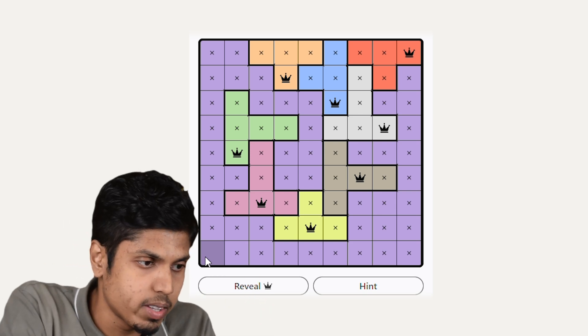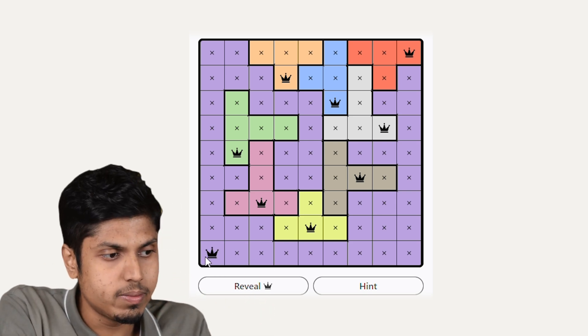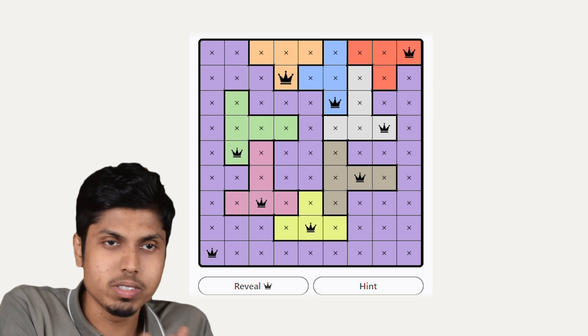We have only one pending unit square in the bigger violet square. Let's place a crown here and this game is done.